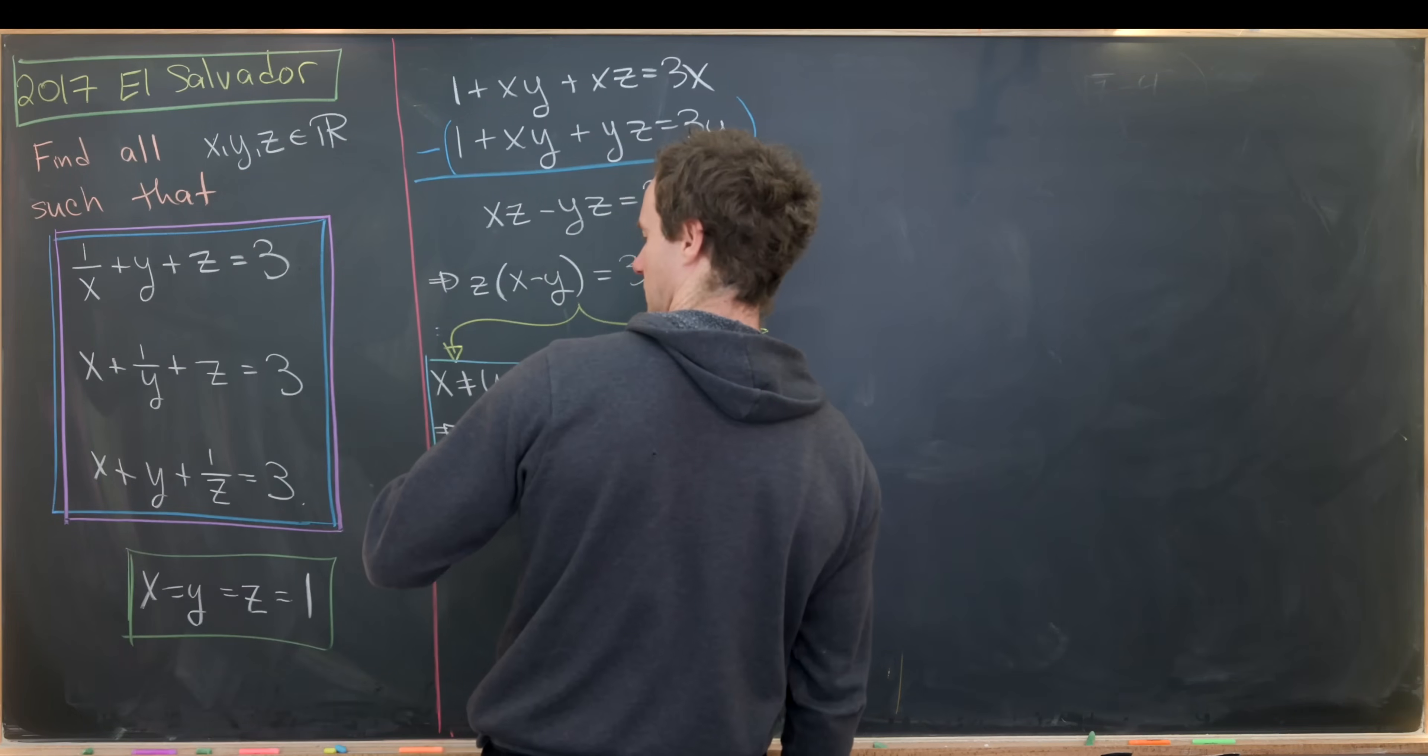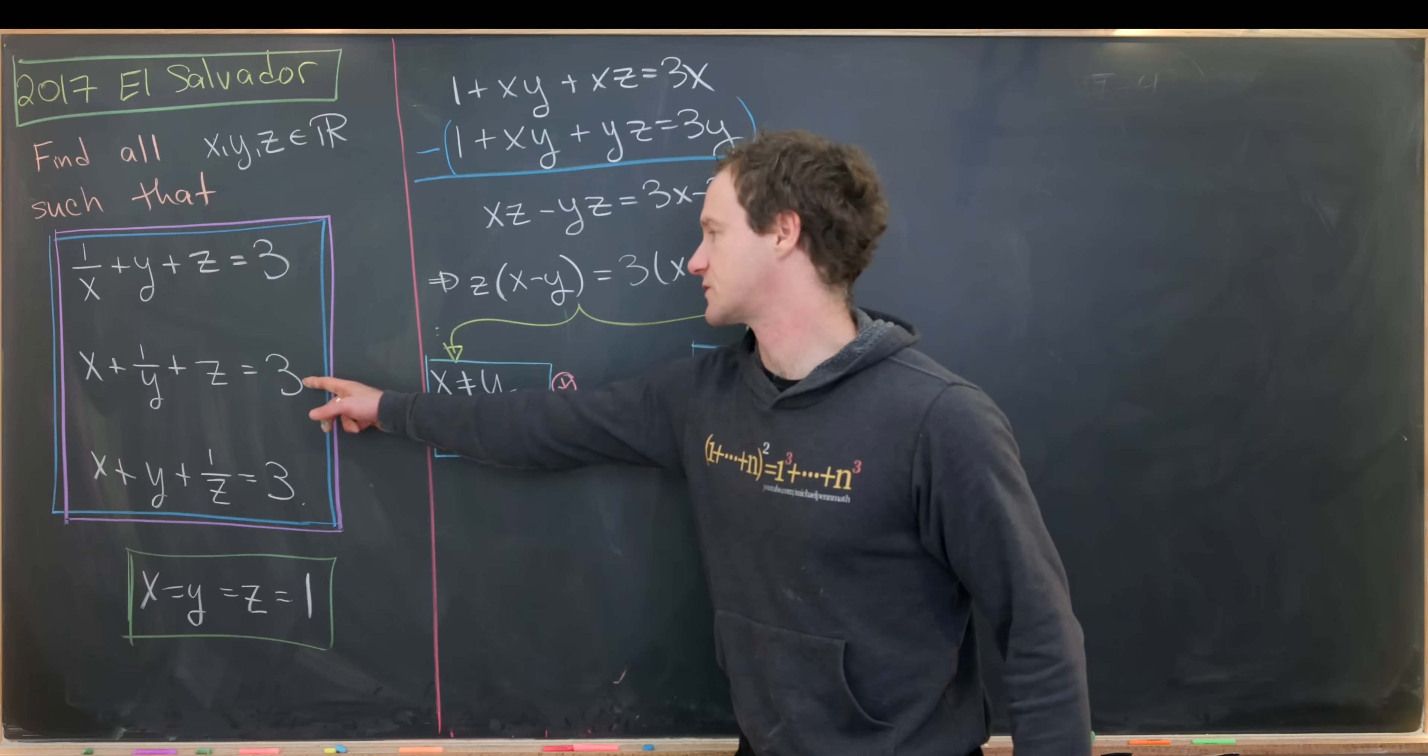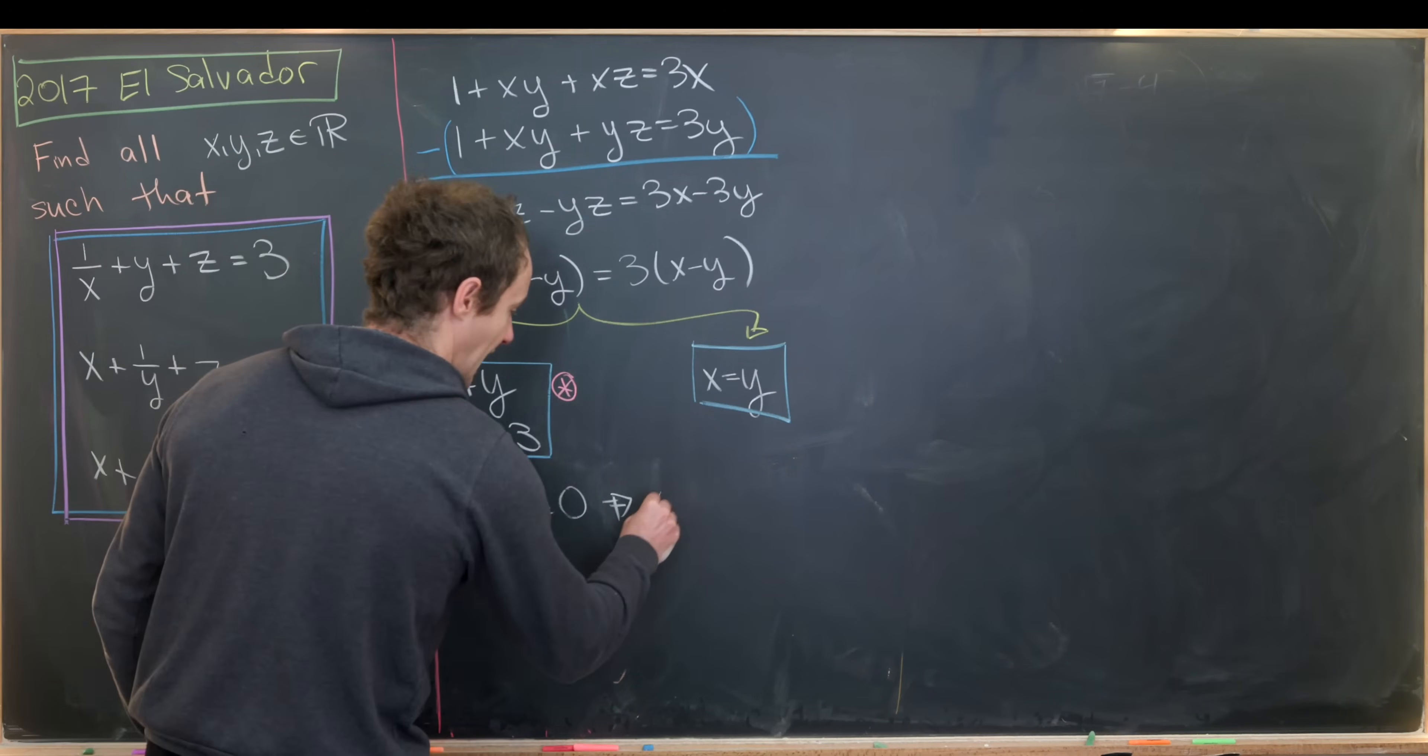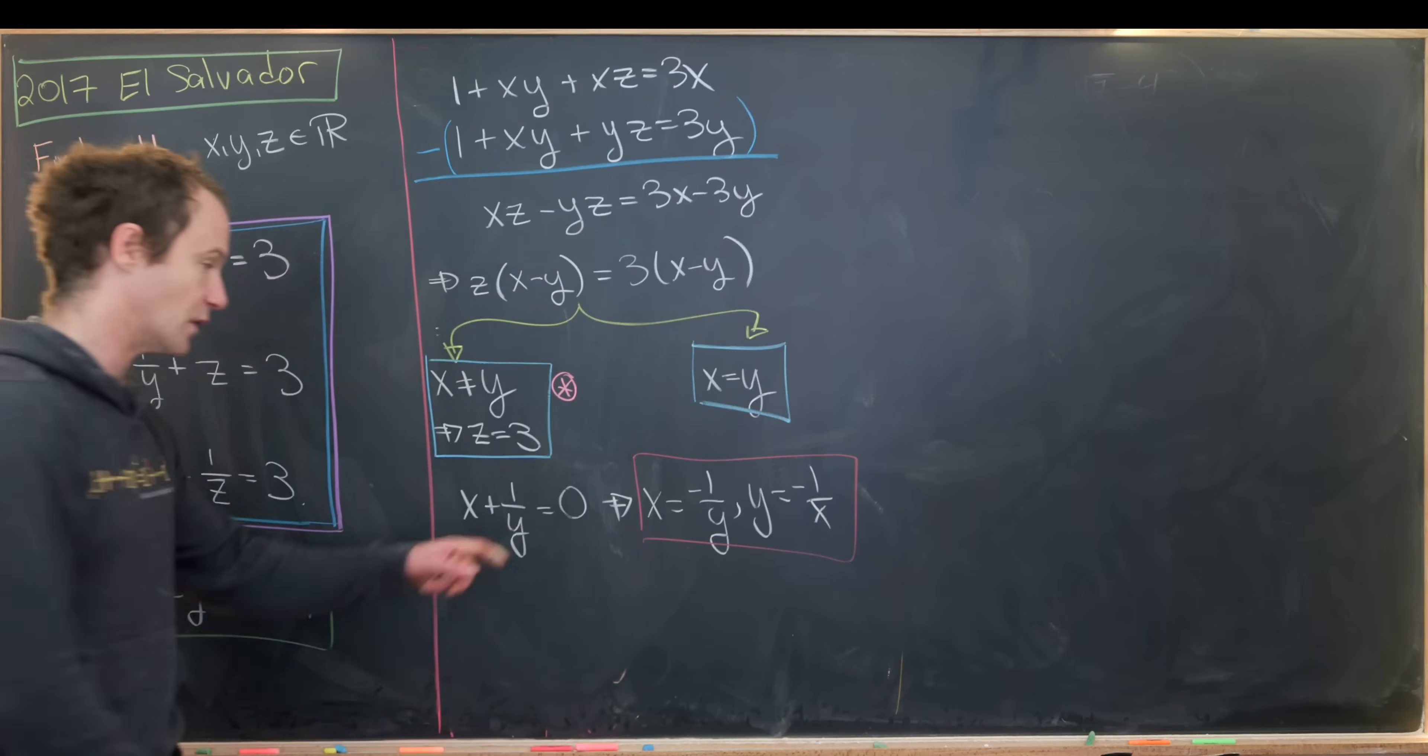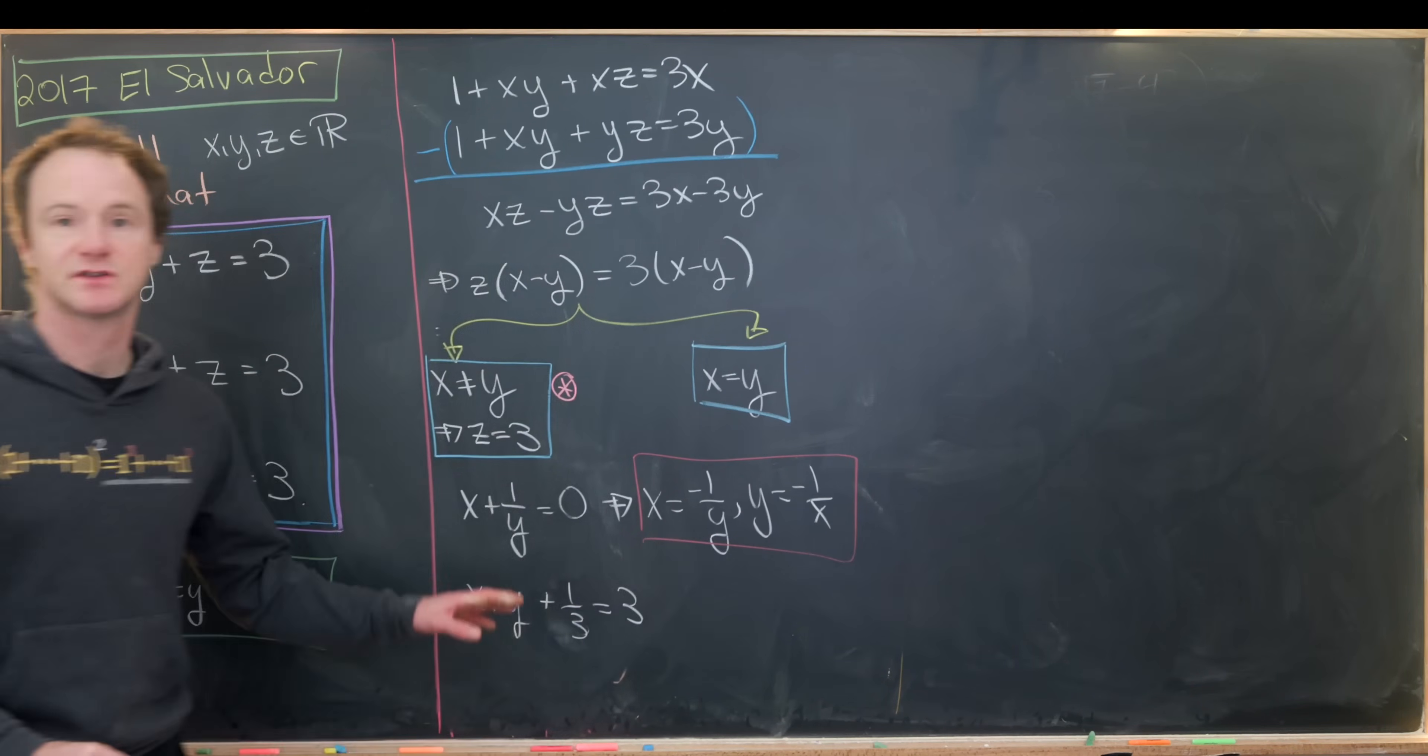Looking over here we have two main equations that we might want to work with because in the case when z equals 3 these two equations really tell us the same information. Plugging in z equals 3 we see that x plus 1 over y equals 0 which means x equals negative 1 over y. And then plugging z equals 3 over here we see that we get x plus y plus 1 over 3 equals 3.